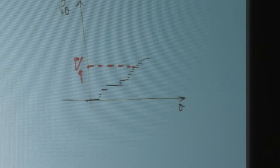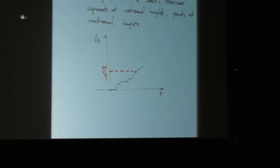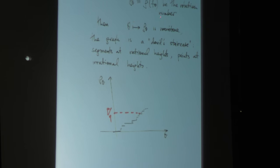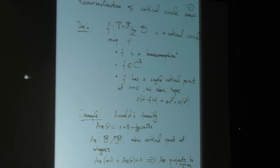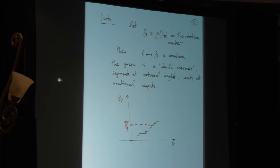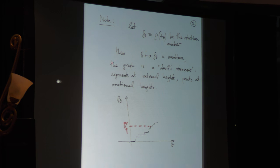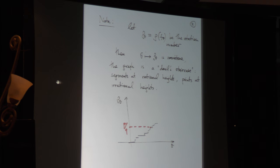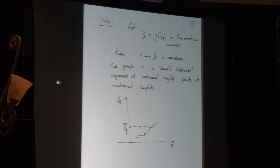It's worthwhile to remind you how the rotation number in such a family depends on θ in a strictly monotone fashion. If you plot the graph, you get a devil's staircase. At rational heights you get intervals — typically called the mode-locking intervals — these are the intervals in which you have a fixed combinatorial rotation number. At irrational heights you have single points.